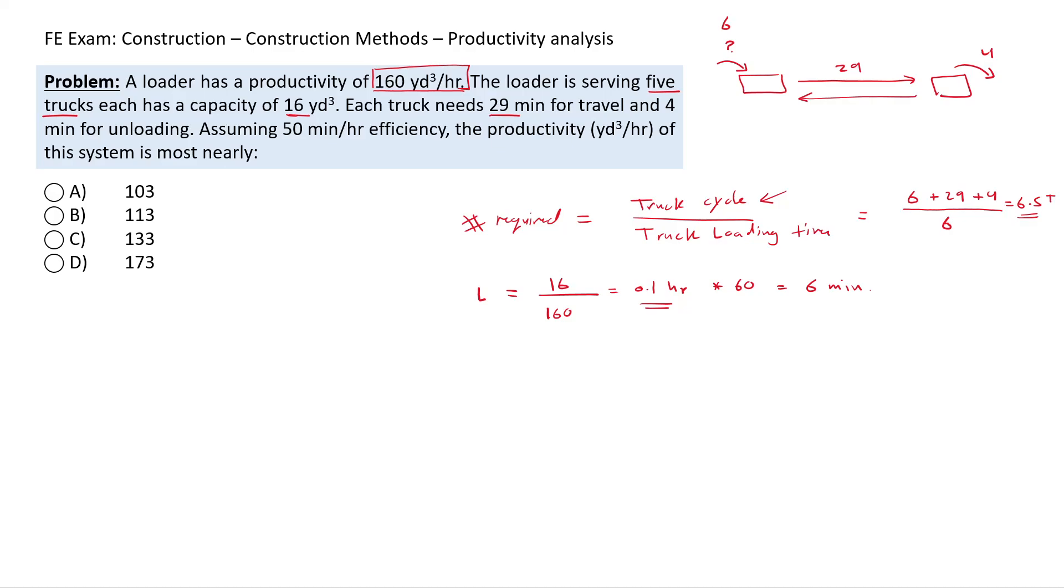So our production should be how much trucks available, which is five, divided by how much trucks theoretically we need, which is 6.5, multiplied by our loader production, which is 160 cubic yards per hour, multiplied by our efficiency.